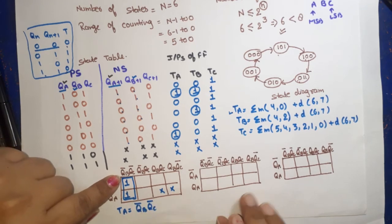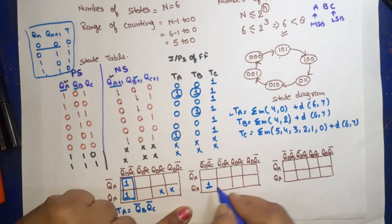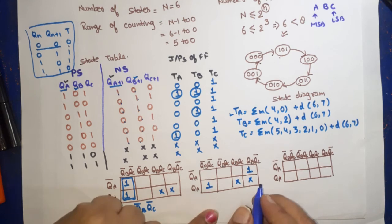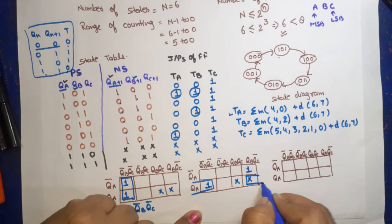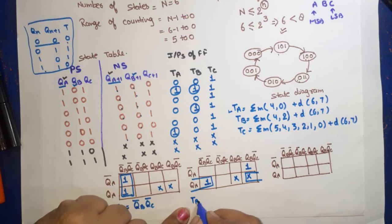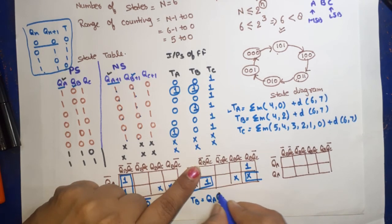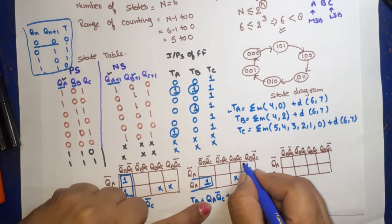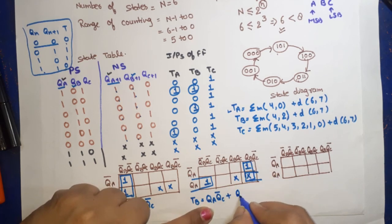Now for TB: minterms are 4 and 2. Don't cares are 6 and 7. First pair forms back to back. From this row, equation is TB equals QA from first and last column, we get QC bar. Plus this combination gives QB QC bar.